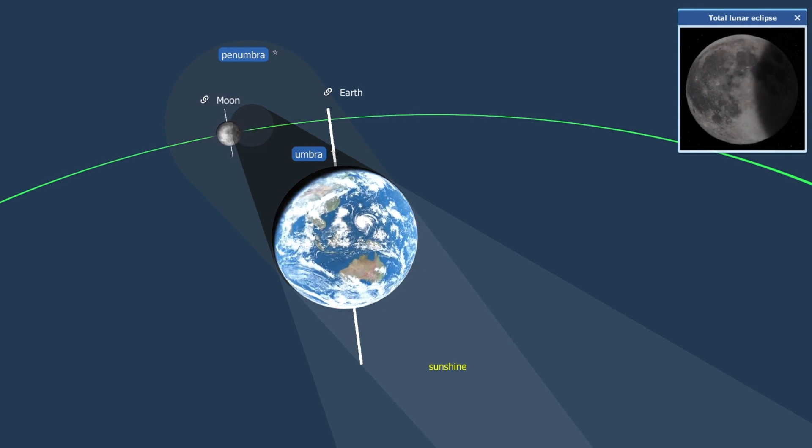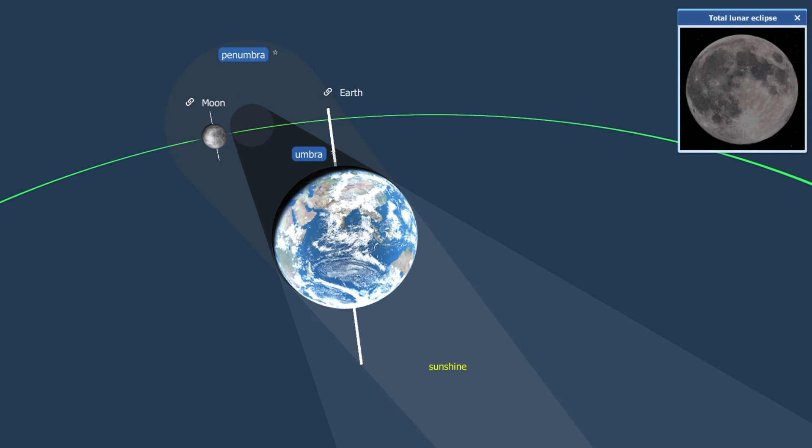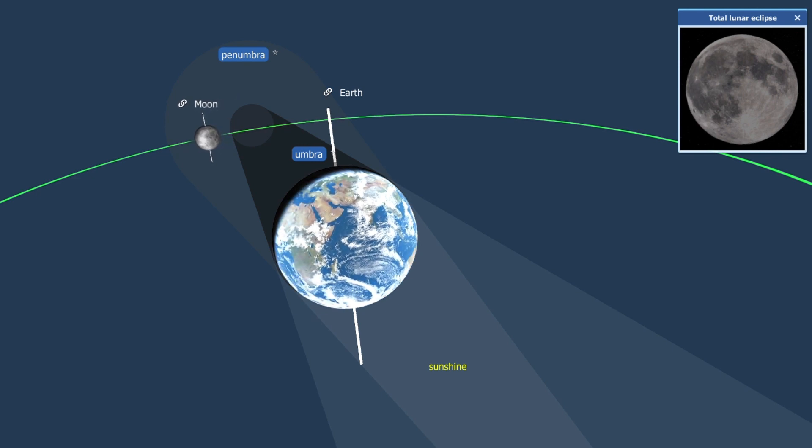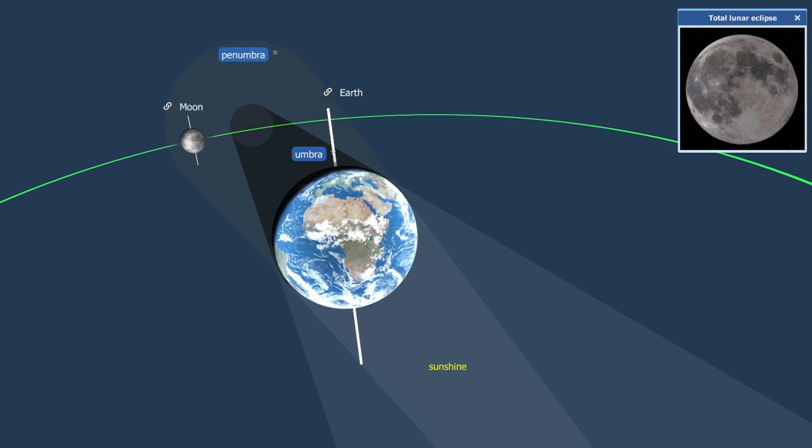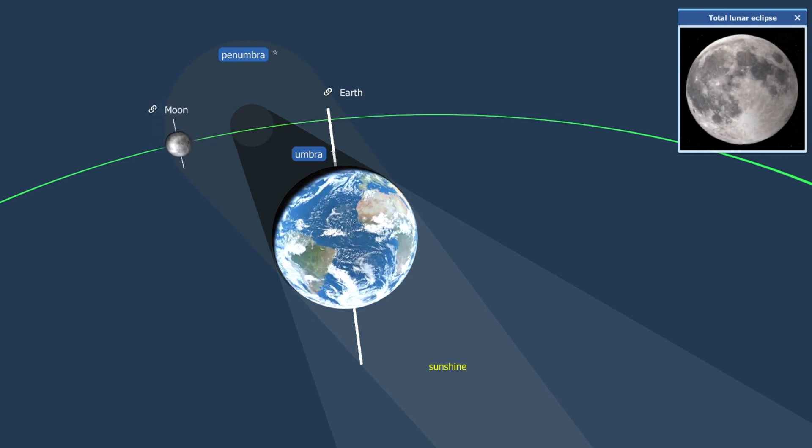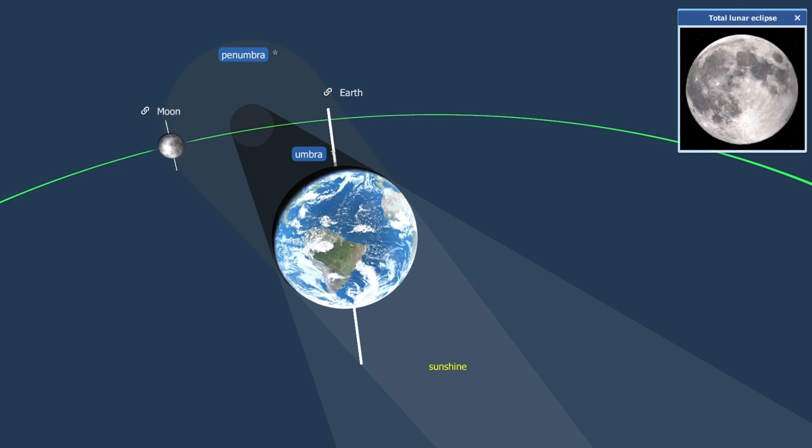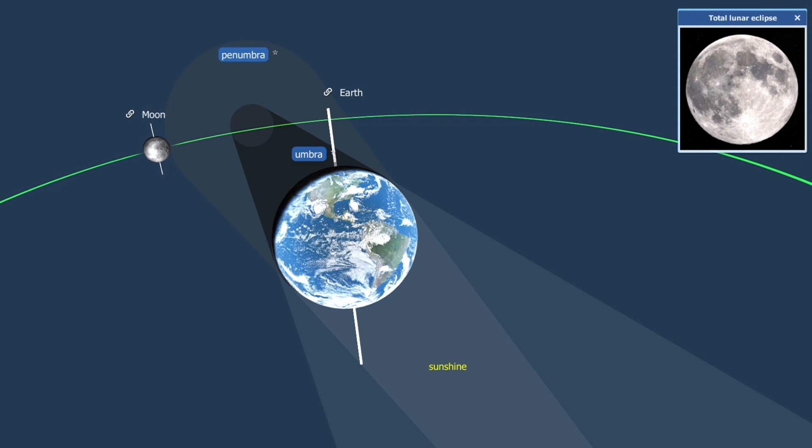It is not even during a total lunar eclipse that the Moon disappears completely from the night sky. It usually appears to be a deep red color. This is because the Earth's atmosphere refracts the sunlight and reflects part of it into the Earth's shadow. Since the long wavelength red light is less absorbed in the atmosphere, the Moon appears red.